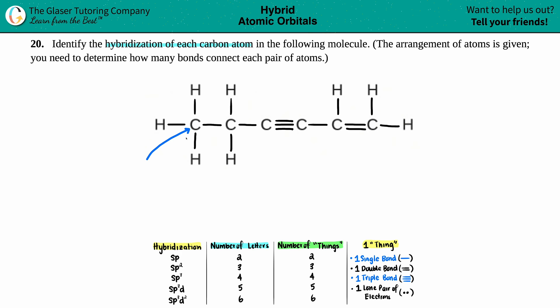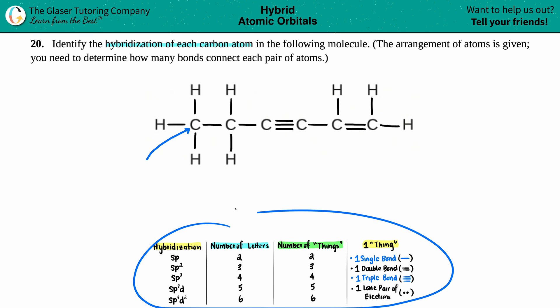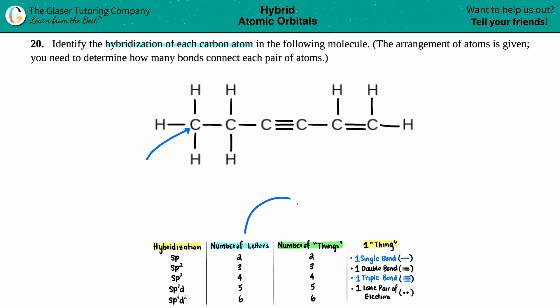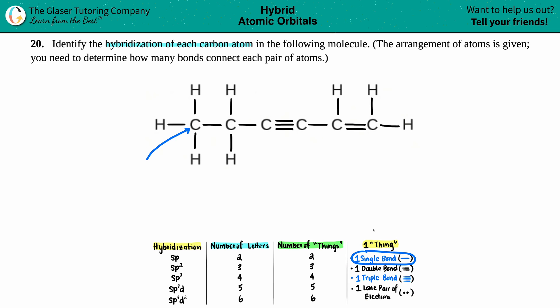Now we just need to determine the hybridization for each carbon. Hybridization comes down to the s, p, and d orbitals coming together to make bonds. Your hybridization always corresponds with the number of letters - for example, sp2 has an s and two p's, that's three letters total. sp3 adds one more p for four letters total. The number of letters corresponds to the total number of 'things' around the element. One single bond is one thing, one double bond is one thing, one triple bond is one thing, and one lone pair of electrons is one thing.